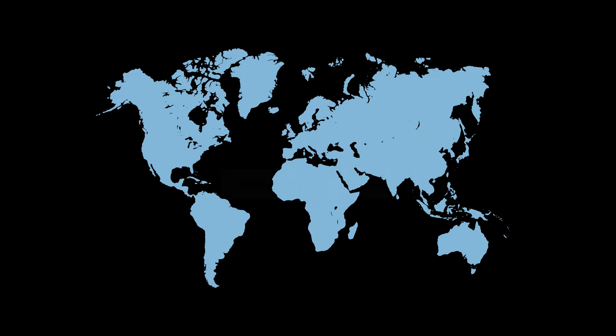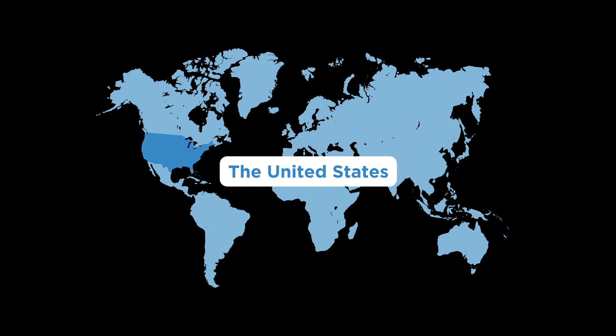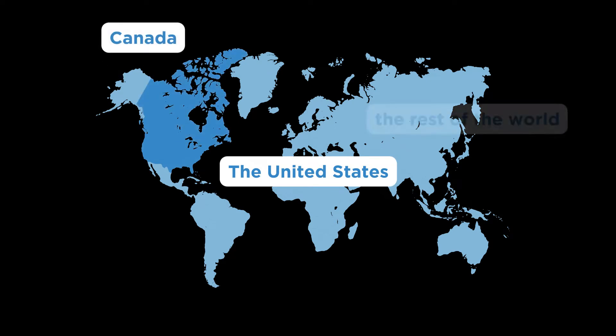Google sees the world as three separate regions: the United States, Canada, and the rest of the world.